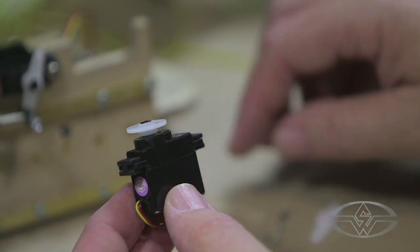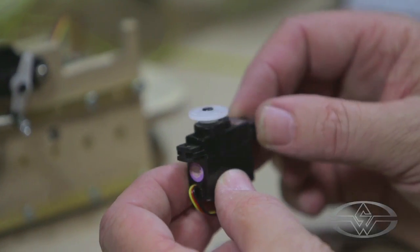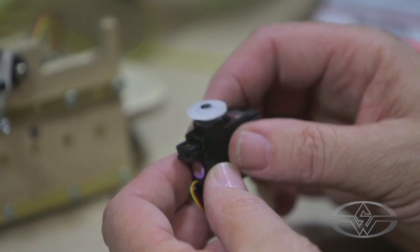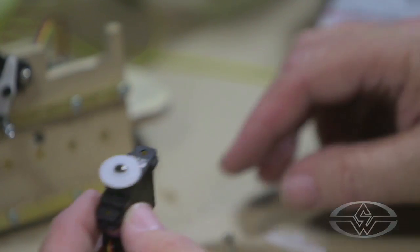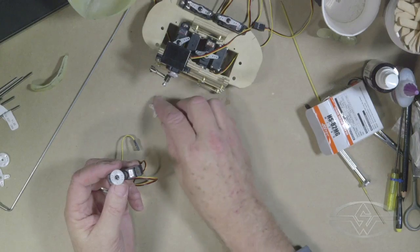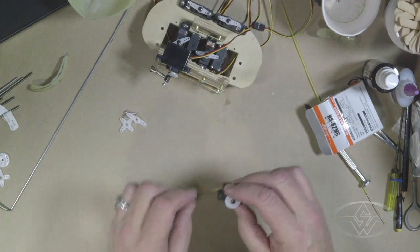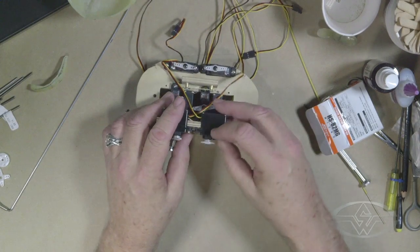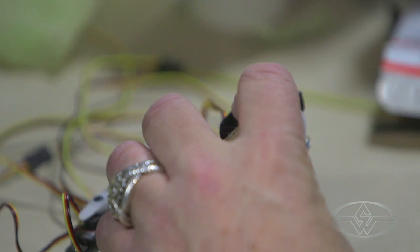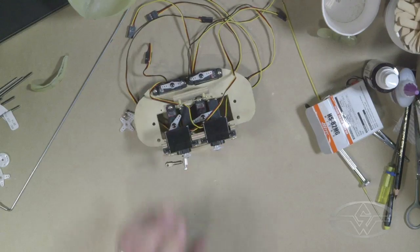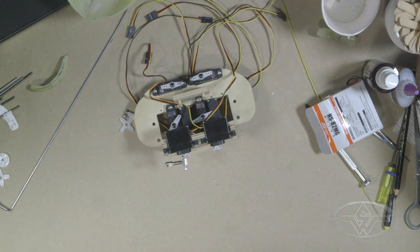I know some people wonder about if you use these grommets if there's going to be too much flex in the servo going back and forth, and I've never really had that problem, so that seems to be okay. I'm going to go ahead and put this guy in here, and then I will grab a pencil so I can make a little mark where I can make the drill.